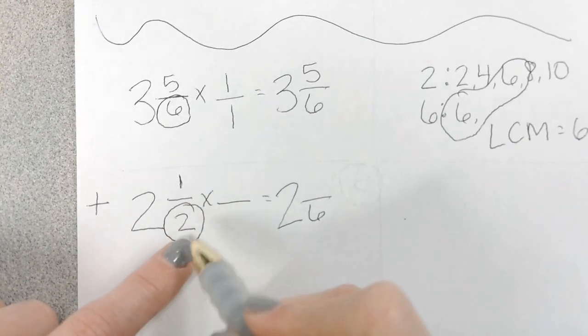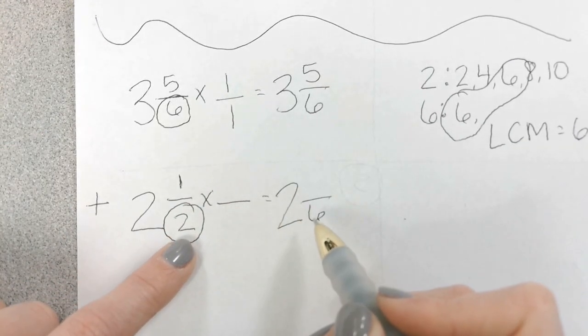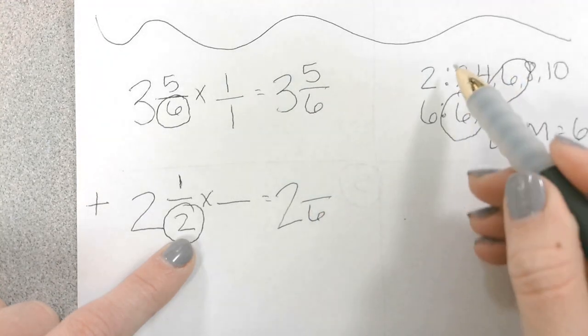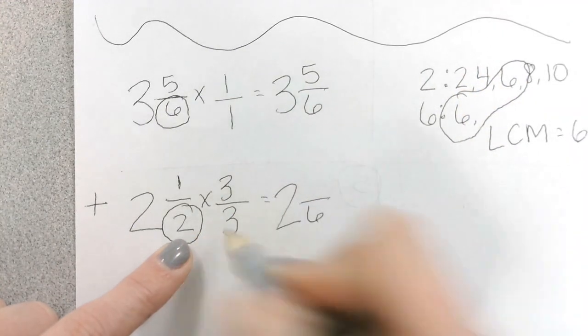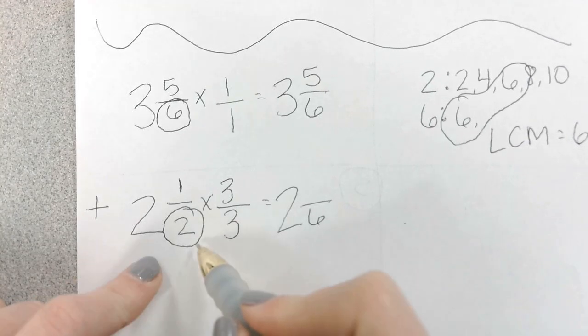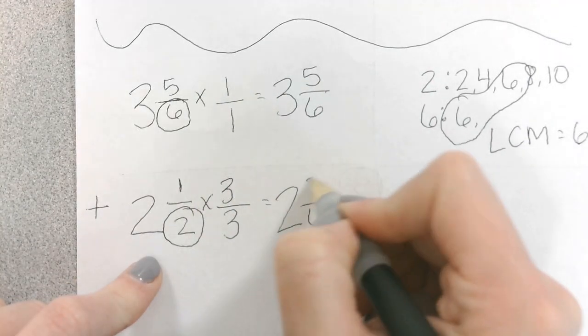Okay. Now here, 2 times what gives us 6? If you don't know, you can go to your multiples. 1, 2, 3. So we're multiplying this entire fraction by 3 thirds. 2 times 3 is 6. 1 times 3 is 3.